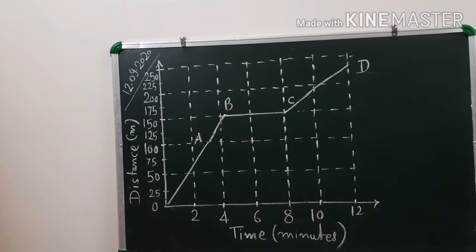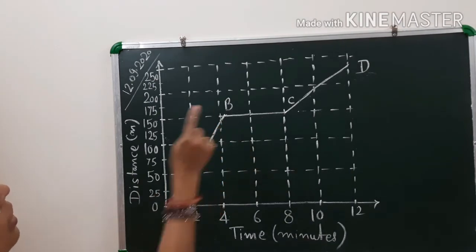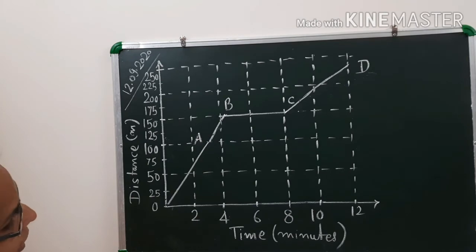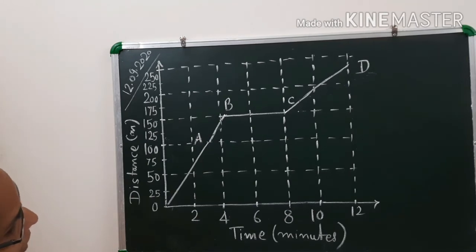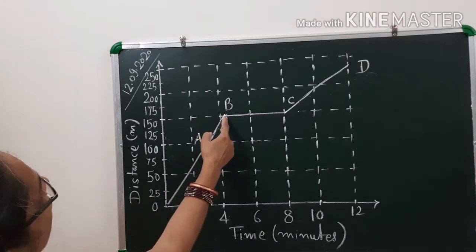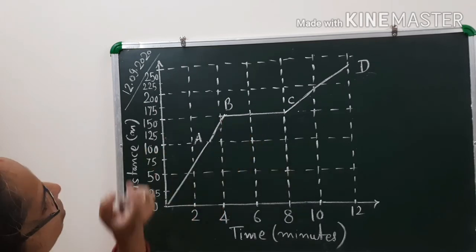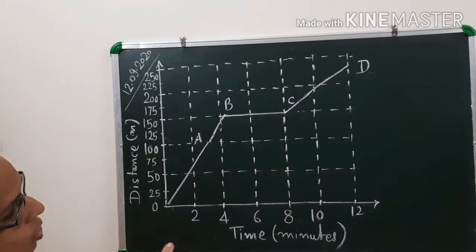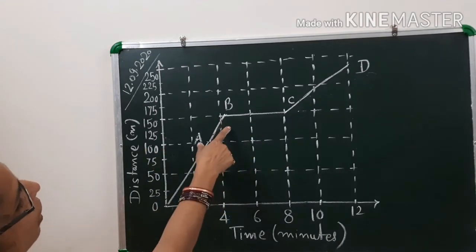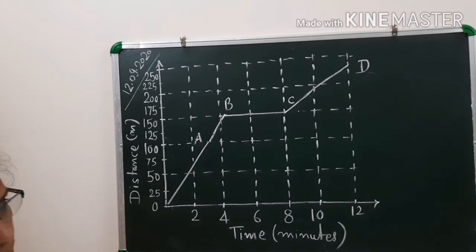The graph between B and C is a straight line parallel to the time axis, which indicates that the body is at rest. At point B, the distance is 150, and at point C, the distance is also 150 — so there is no change in the position of the object. Therefore, during BC, Bujo is at rest.